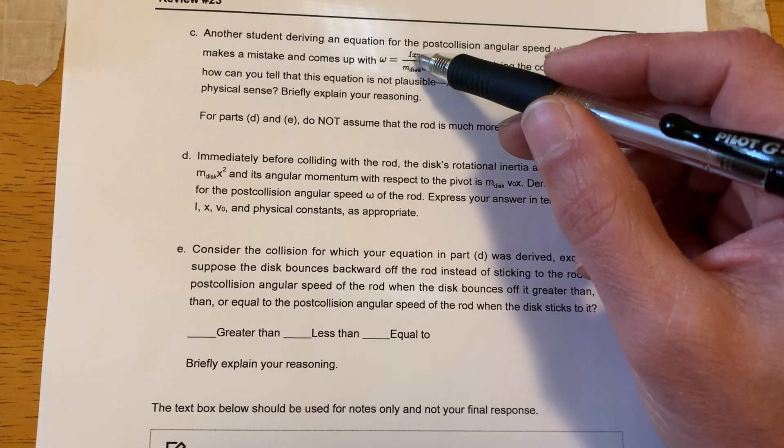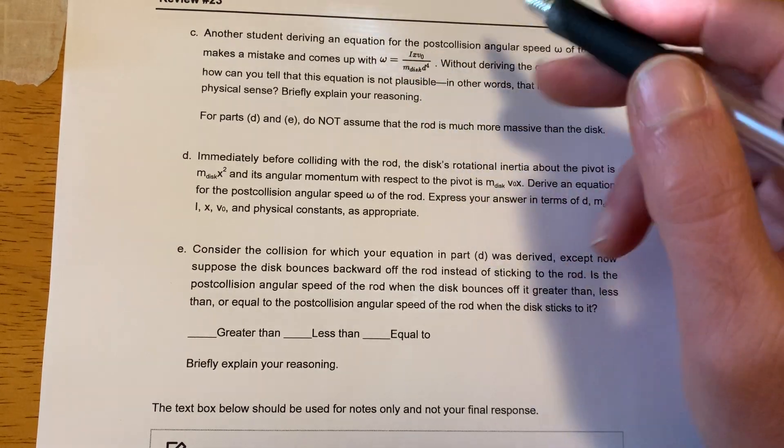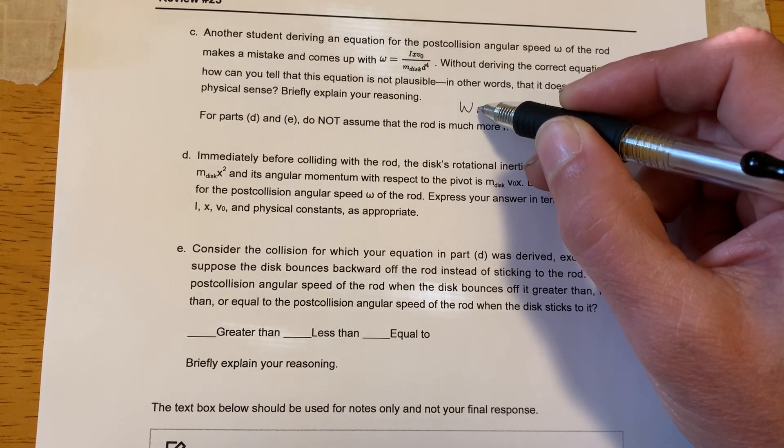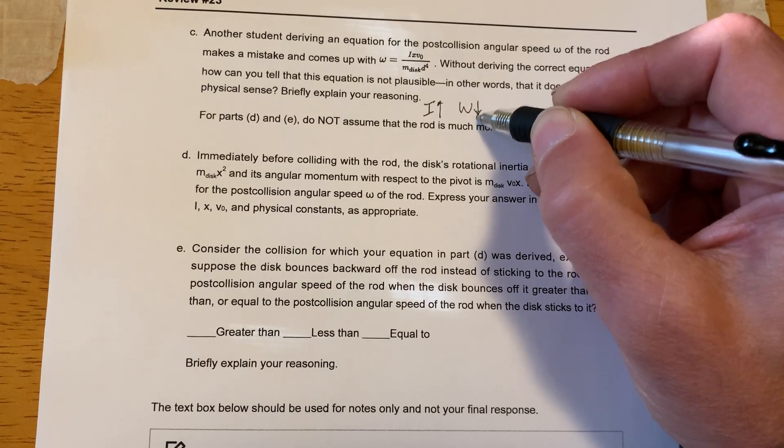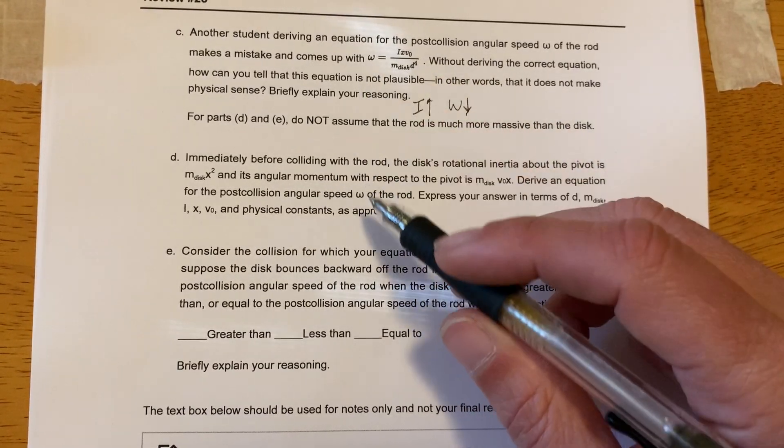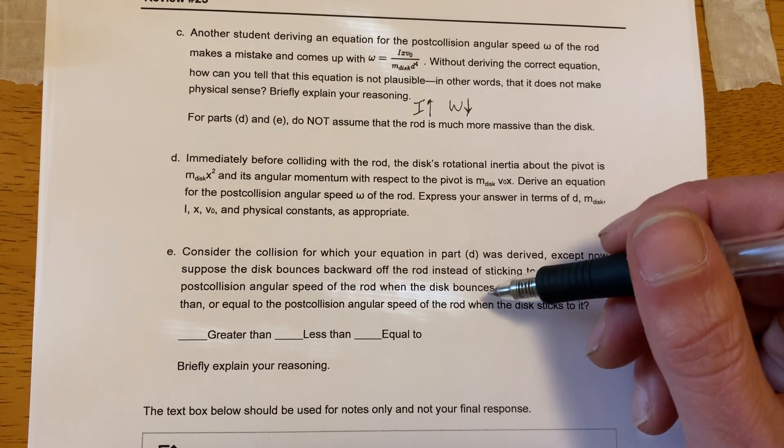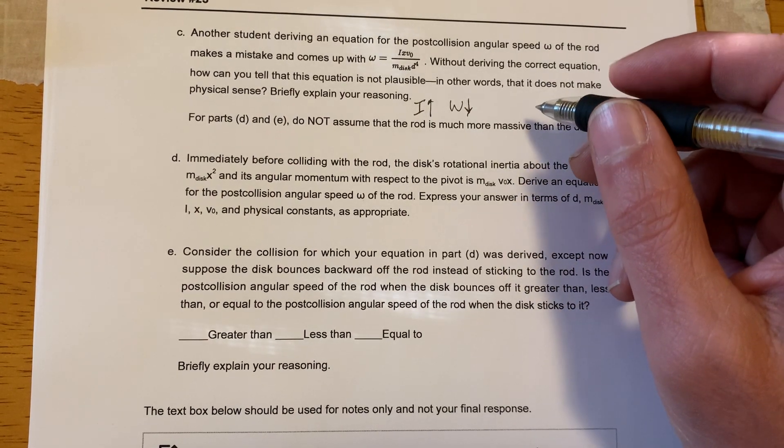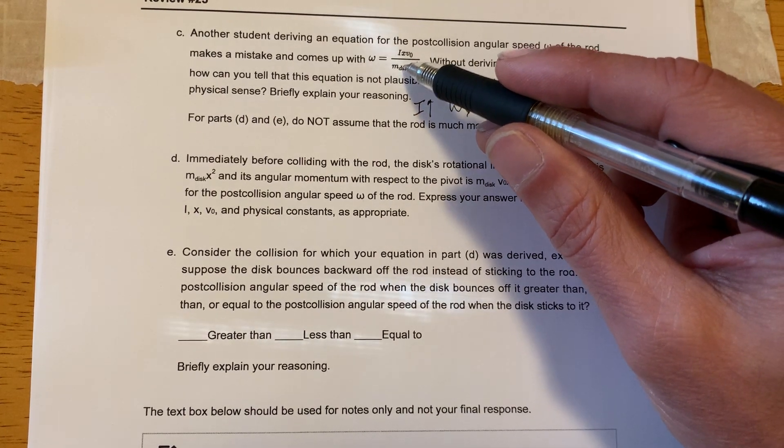So one reason is I would expect moment of inertia and omega to be indirect. So as I goes up, I would expect omega to go down. In this particular case, they're telling me that they're directly related. What about the mass of the disk that's being thrown?